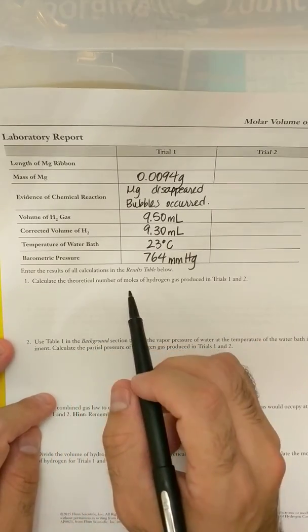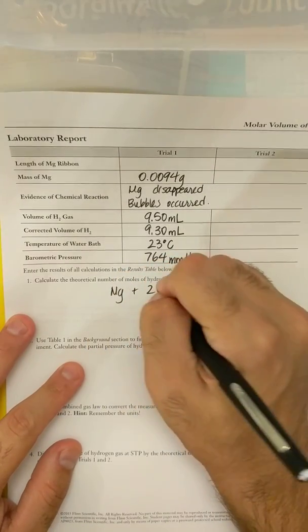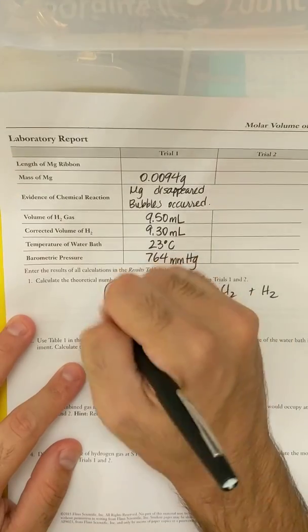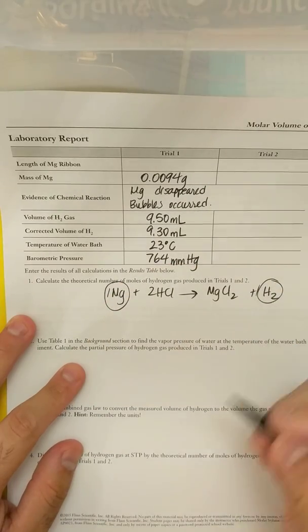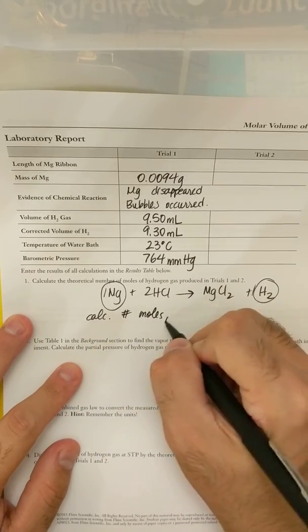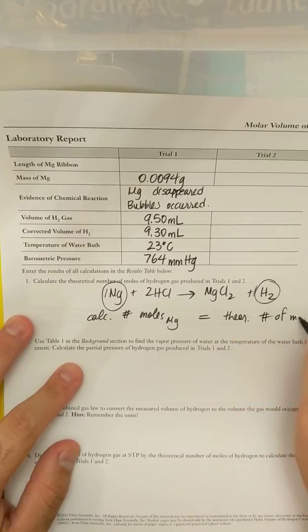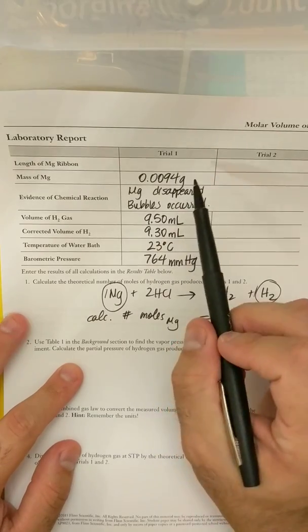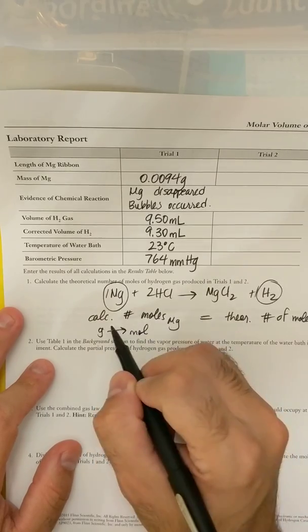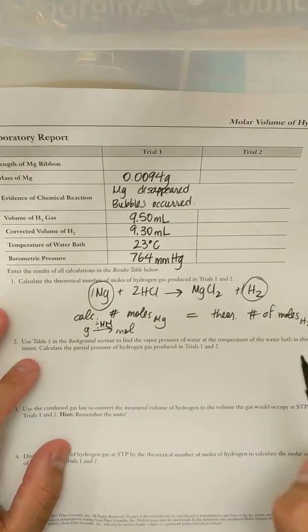So for the first one, it says calculate the theoretical number of moles of hydrogen gas produced. Well, you were given a balanced chemical equation in this reaction. I'm just writing it already balanced. And for every one mole of magnesium, there is one mole of hydrogen. So calculate the number of moles of magnesium and it's equal to the theoretical number of moles of hydrogen. You should already have the grams of magnesium. I'm just going to go from grams to moles for magnesium by dividing by the molar mass of magnesium.